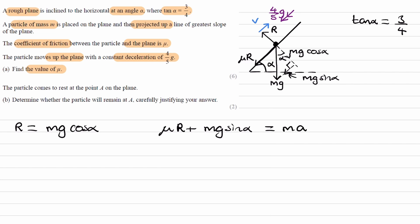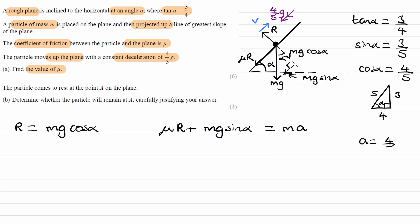Now let's work out sin alpha and cos alpha using a right-angled triangle. If tan alpha is 3 over 4, then the opposite side is 3 and the adjacent is 4. By Pythagoras, the hypotenuse is 5. So sin alpha equals 3 over 5 (opposite over hypotenuse) and cos alpha equals 4 over 5 (adjacent over hypotenuse). The acceleration is 4 over 5 g, as given in the question.